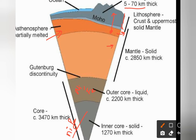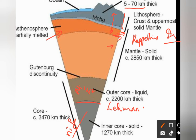The discontinuity separating the outer mantle and inner mantle is known as the Repetti discontinuity. The layer between the inner core and the outer core is known as the Lehmann discontinuity. The core is composed predominantly of iron and nickel. At the inner core, the temperature is almost 5000 degrees Celsius and the pressure is also very high.